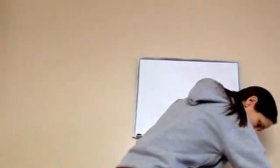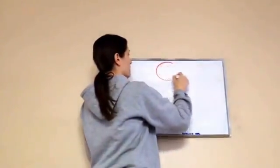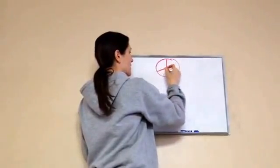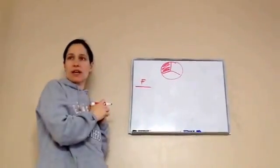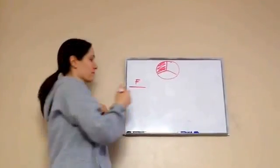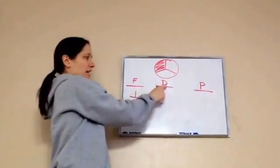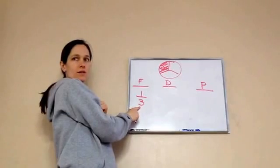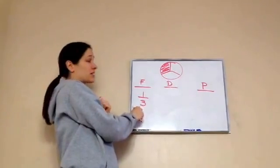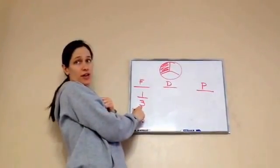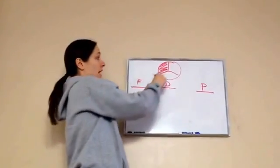Now I'm going to draw a peace sign, which divides a circle into three sections. If I fill in one of them, what's the fraction? One-third — very good. Can I find the decimal easily? Not really, because this is not a ten, a hundred, or a thousand on the bottom, so we can't use that shortcut.